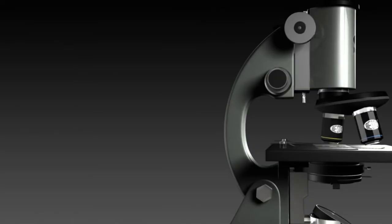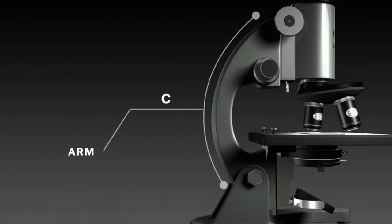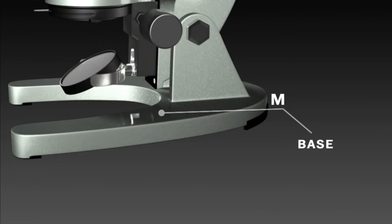The third components are the arm and the base. The arm connects the body tube to the base of the microscope. The base supports the microscope and its illuminator.